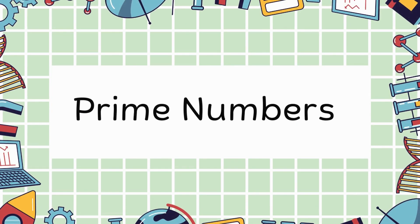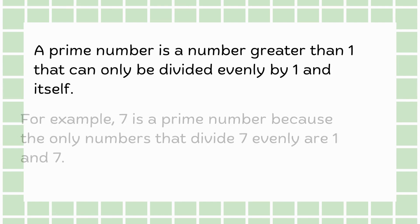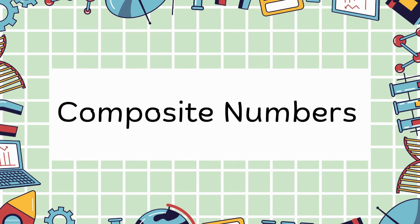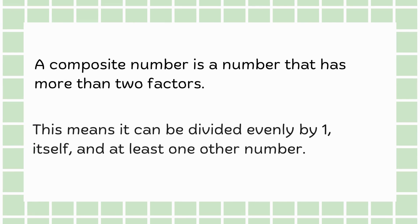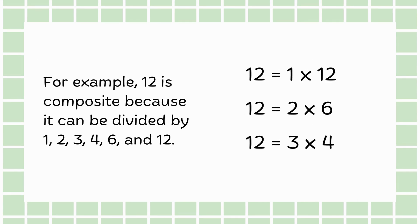Next, we will learn about prime numbers. A prime number is a number greater than 1 that can only be divided evenly by 1 and itself. For instance, 7 is a prime number because the only numbers that divide 7 evenly are 1 and 7. Now, let's discuss composite numbers. A composite number is a number that has more than 2 factors, meaning it can be divided evenly by 1, itself, and at least one other number. For example, 12 is composite because it can be divided by 1, 2, 3, 4, 6 and 12.